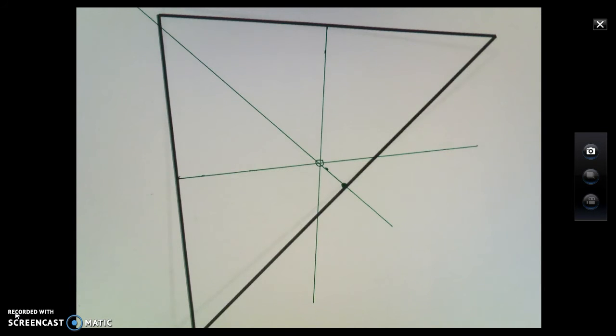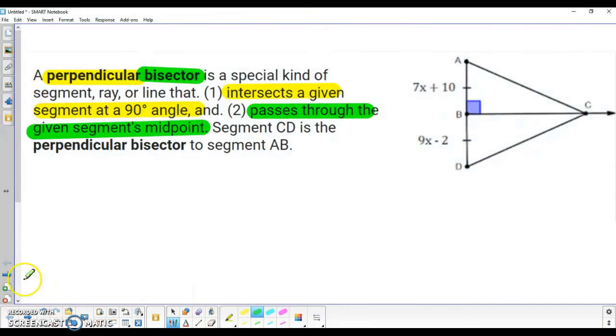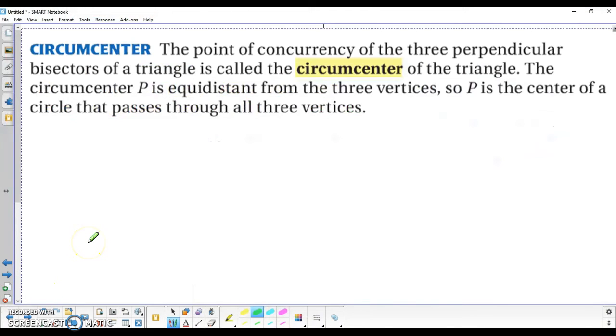By definition, that's what's called a point of concurrency. So the three perpendicular bisectors of a triangle will create a point of concurrency where all three are going to meet. The name that we are going to associate with that is called the circumcenter. The circumcenter, by definition, is the point of concurrency of the three perpendicular bisectors of the triangle.